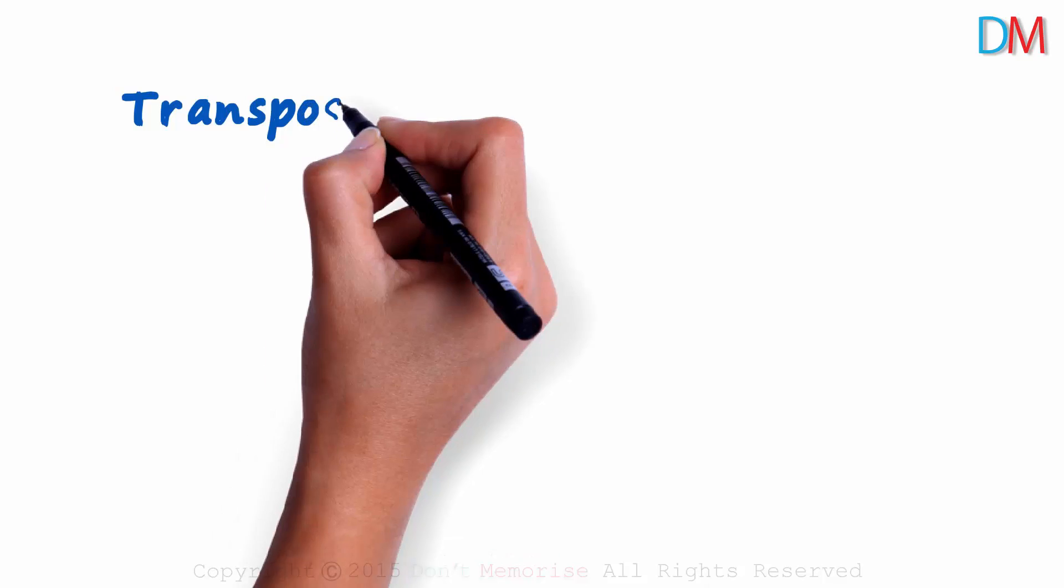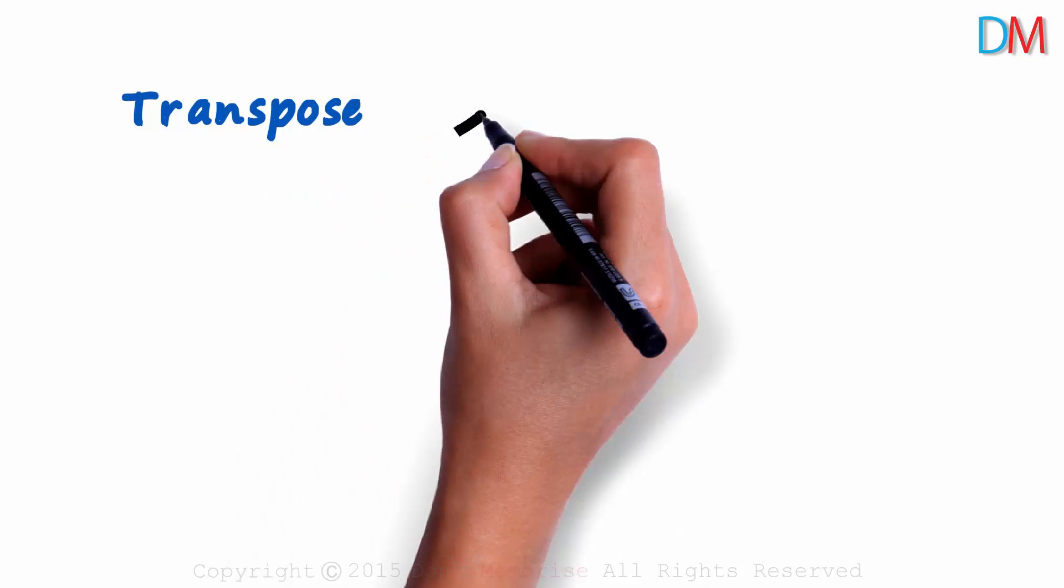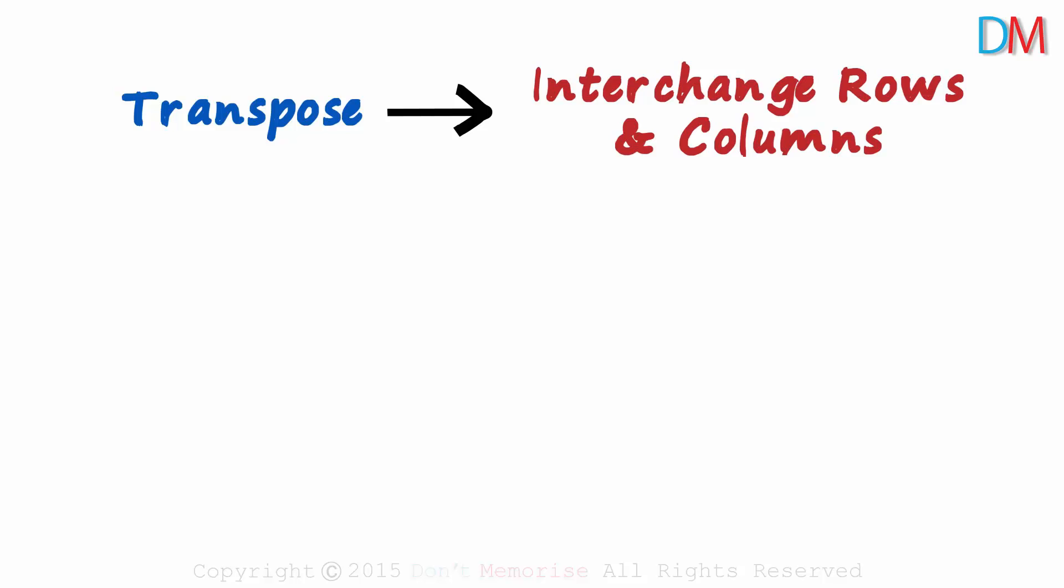What do we mean by the transpose of a matrix? To find the transpose of a matrix, we simply interchange its rows and columns. Yes, that gives us its transpose.